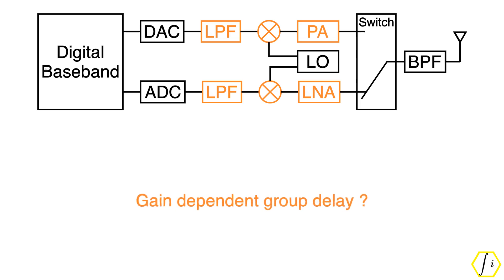Now, what happens if the group delay varies with the gain setting? It turns out that some analog circuit implementations do have gain-dependent group delay. This will add another level of complexity to the calibration process as we now need to repeat the calibration at different RX gain settings. This will increase the calibration time during manufacturing.